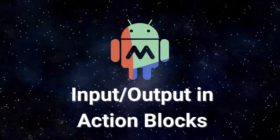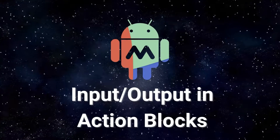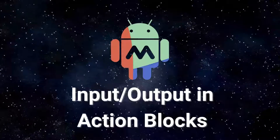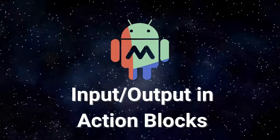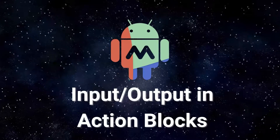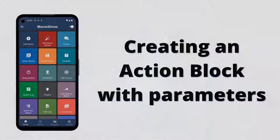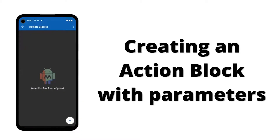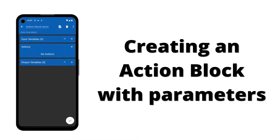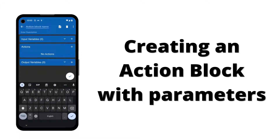In this video, we will explore how we can use input and output parameters in an action block. To demonstrate the use of input and output parameters, we will create a simple action block to convert a temperature from Celsius to Fahrenheit.